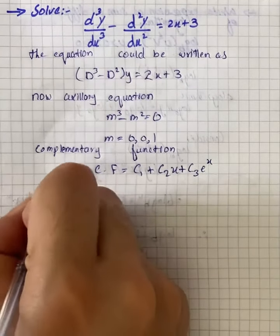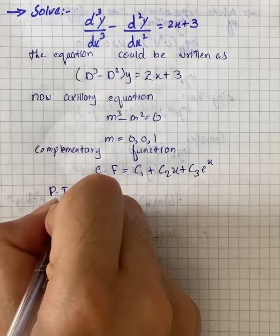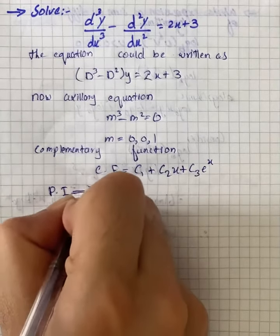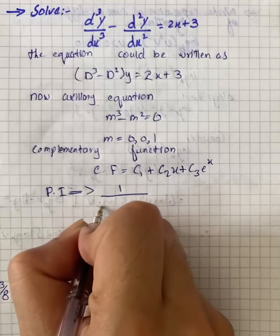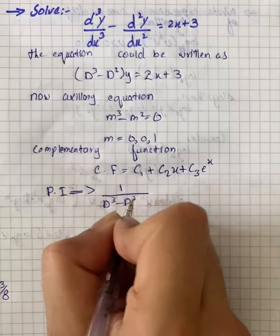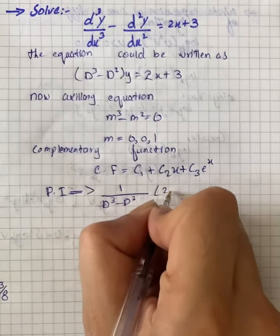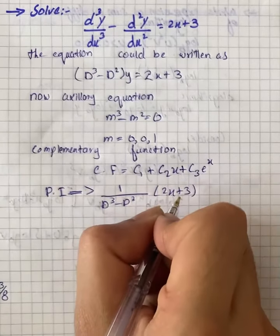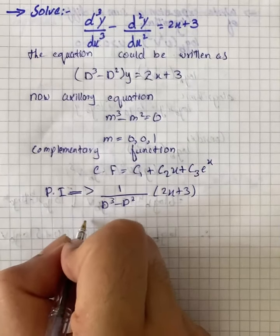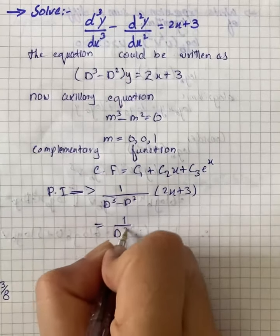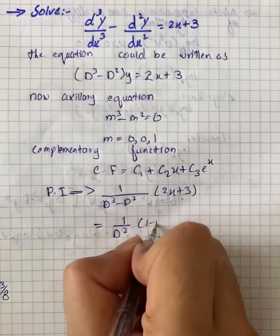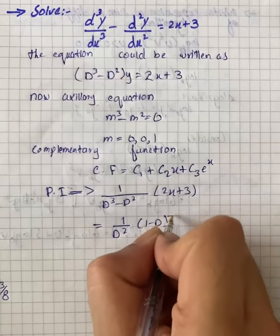Particular integral is equal to 1/(D³ - D²) into (2x + 3), and we will start solving. We have 1/D² × (1 - D)^(-1) into (2x + 3).